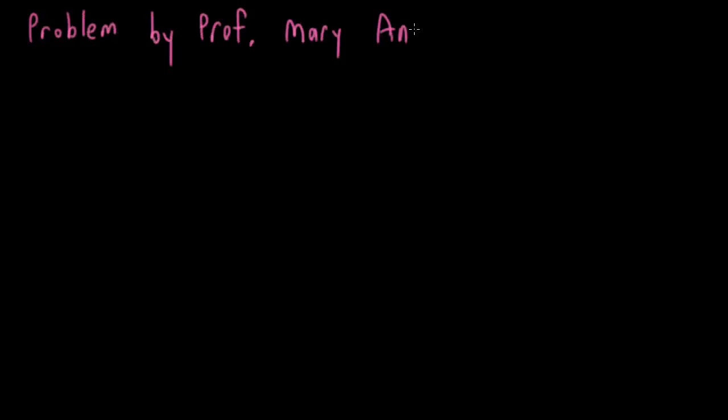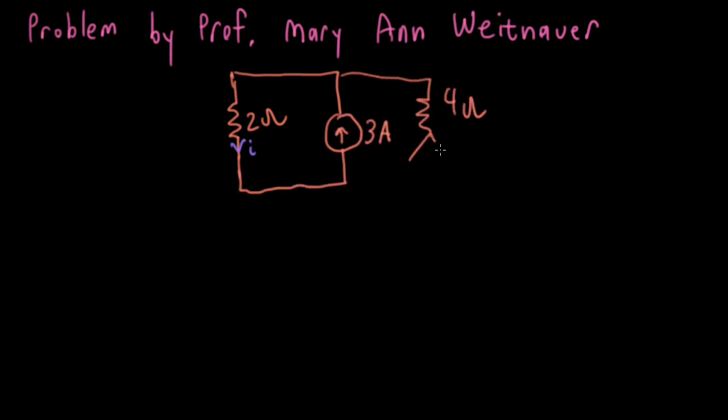So the goal of this problem by Professor Weitnauer is to find the current I flowing down through a 2 ohm resistor. We also have a 3 amp current source, a 4 ohm resistor, and a current controlled voltage source of value 10 IX, where IX is the current that's flowing through a 6 ohm resistor with the current marked going to the right. And we also have a 12 volt source.